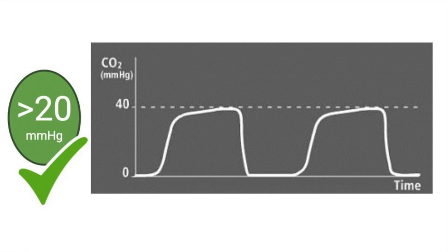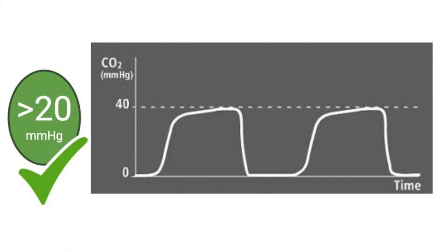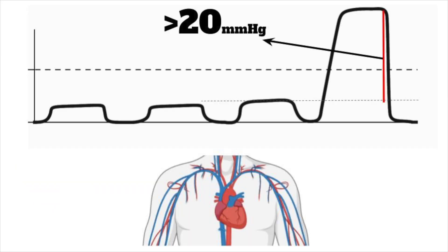Then there's detecting ROSC. A rise of end-tidal CO2 of more than 20 is highly specific for ROSC in patients with PEA arrest. So if you're going to remember one number when it comes to end-tidal CO2 in cardiac arrest, it's 20. So 20 or more reading of end-tidal CO2 suggests adequate chest compressions, and an end-tidal CO2 of more than 20 is highly specific for ROSC in patients with PEA arrest.